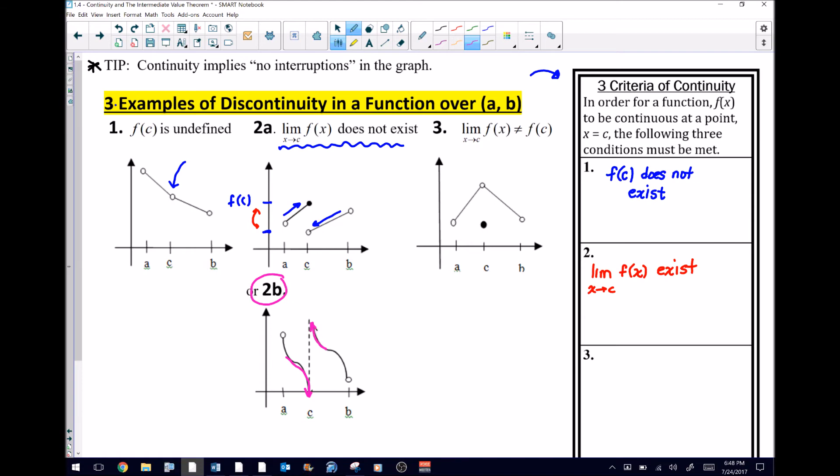But I also want you to keep in mind that 2b would happen to fit into this category as well, because f of C is not defined either because of the vertical asymptote. So you could say that 2b is really discontinuous for more than one reason.